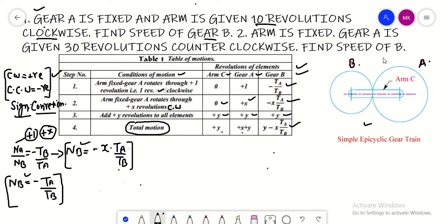What is the equation? It is X plus Y. We are saying if it is fixed, then X plus Y will be equal to zero. This is my first case. And the arm is given 10 revolutions clockwise. You know arm is given Y, so Y will be equal to 10.